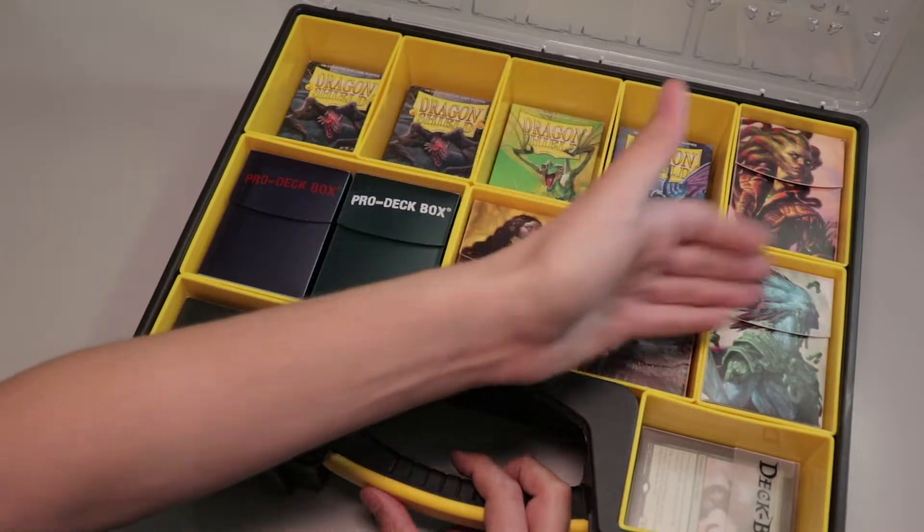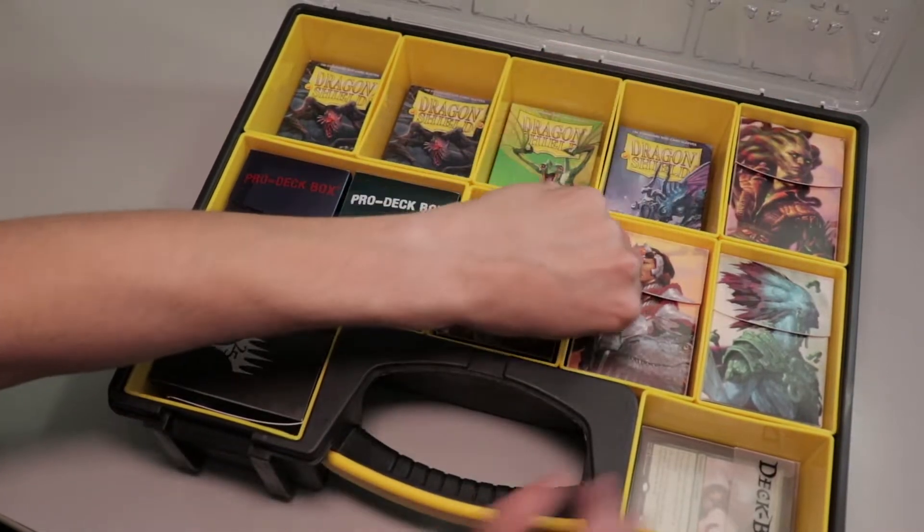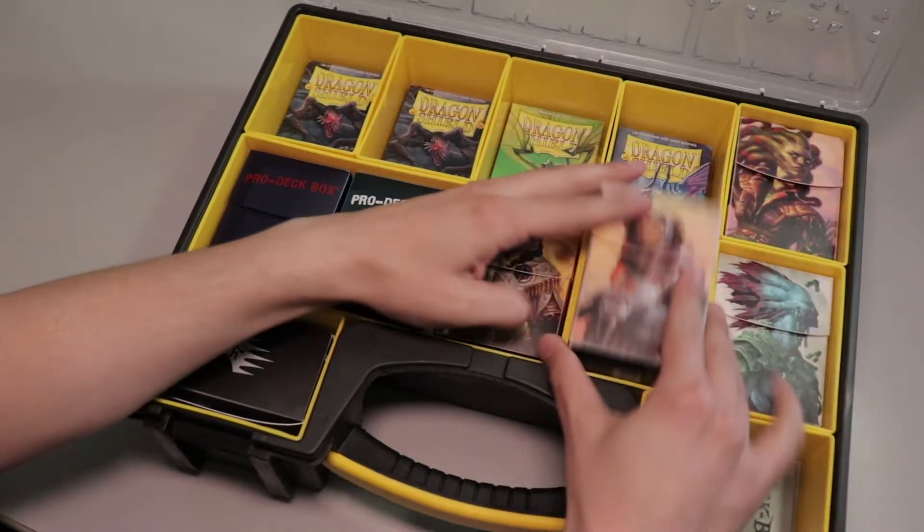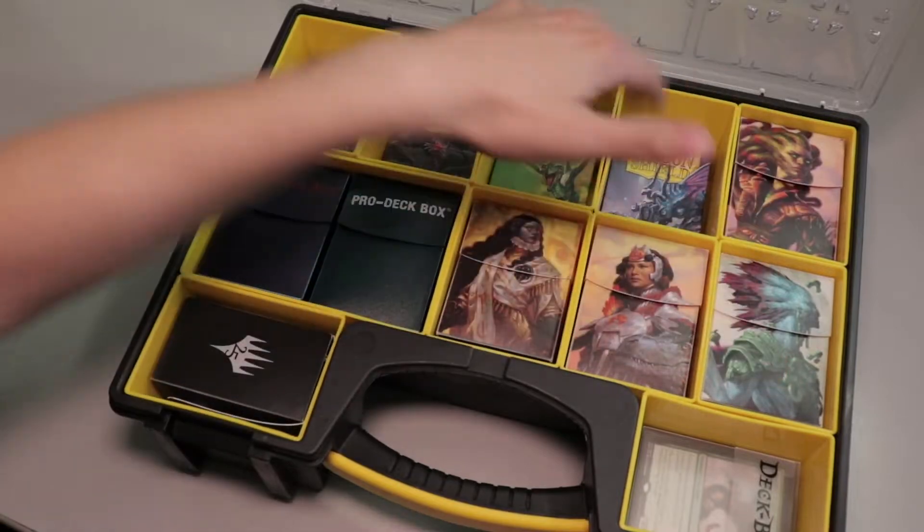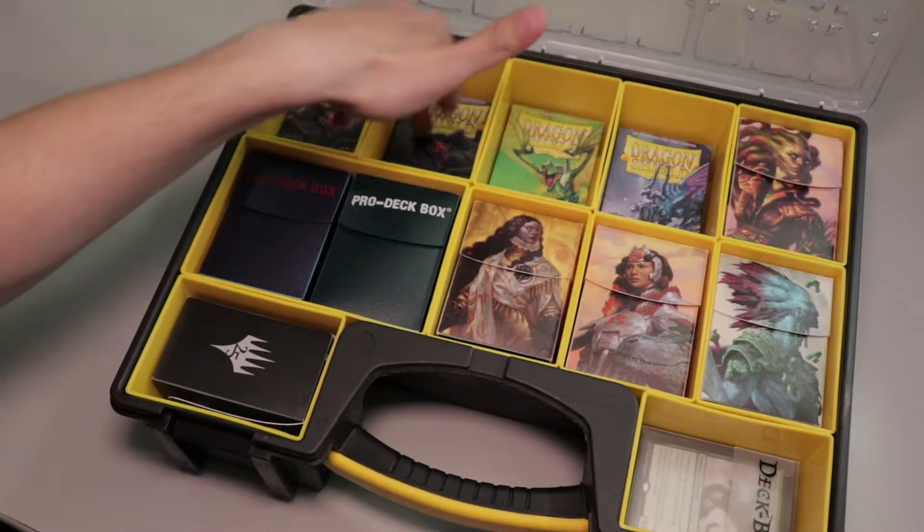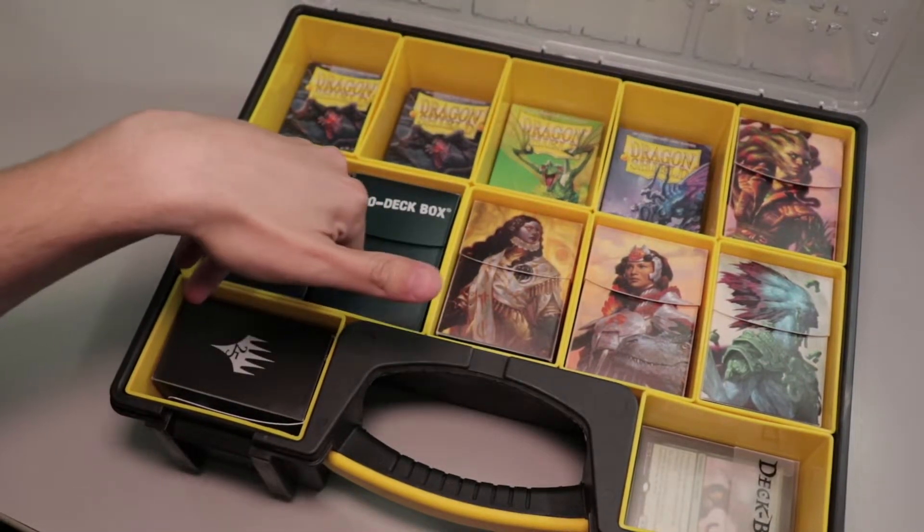I mean these fit perfectly inside. These are 100 count Ultra Pro deck boxes, slide right in with the beautiful art on the outside. This is my standard decks. We have some Pauper decks in the very thematic Dragon Shield Pauper boxes, two Brawl decks.